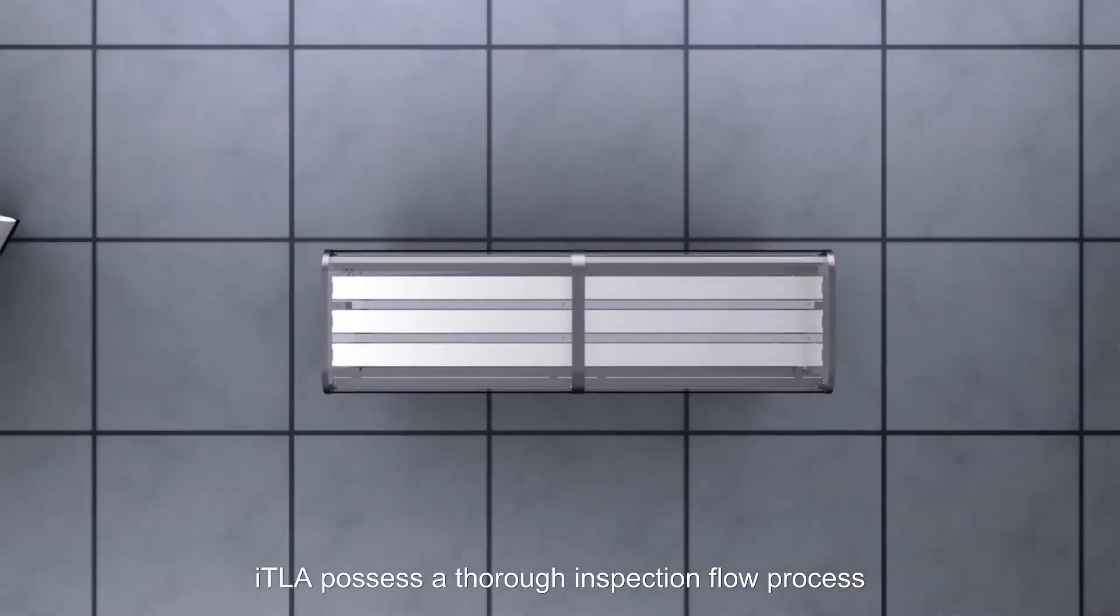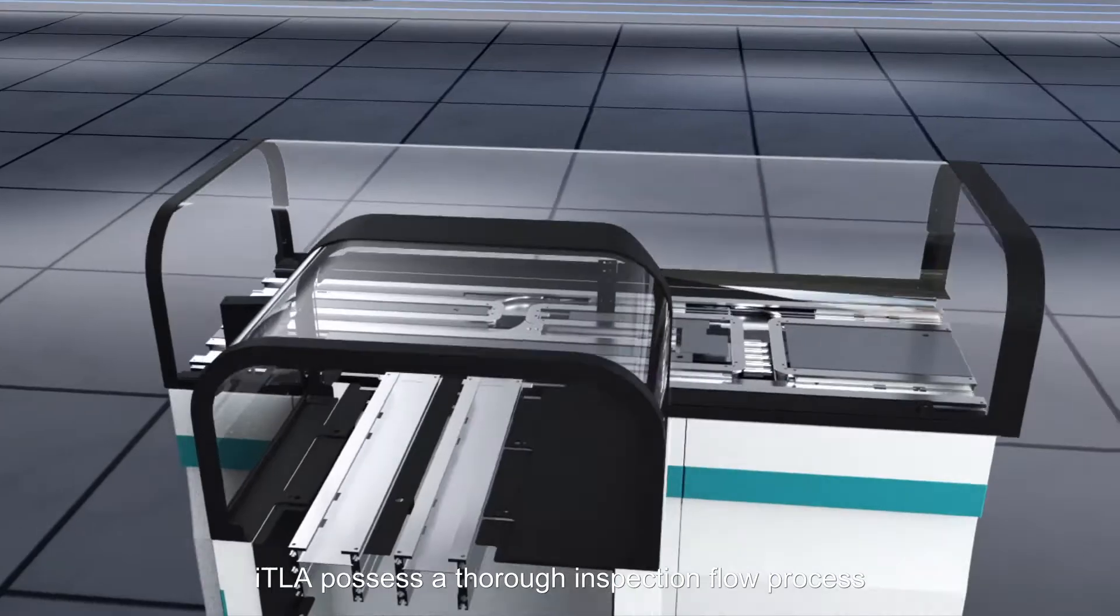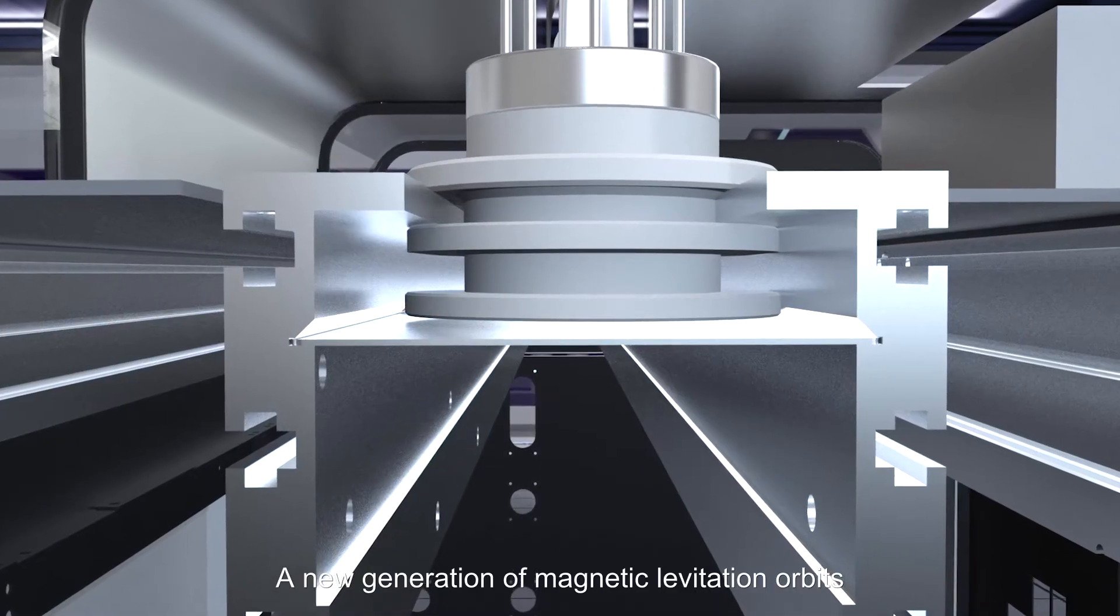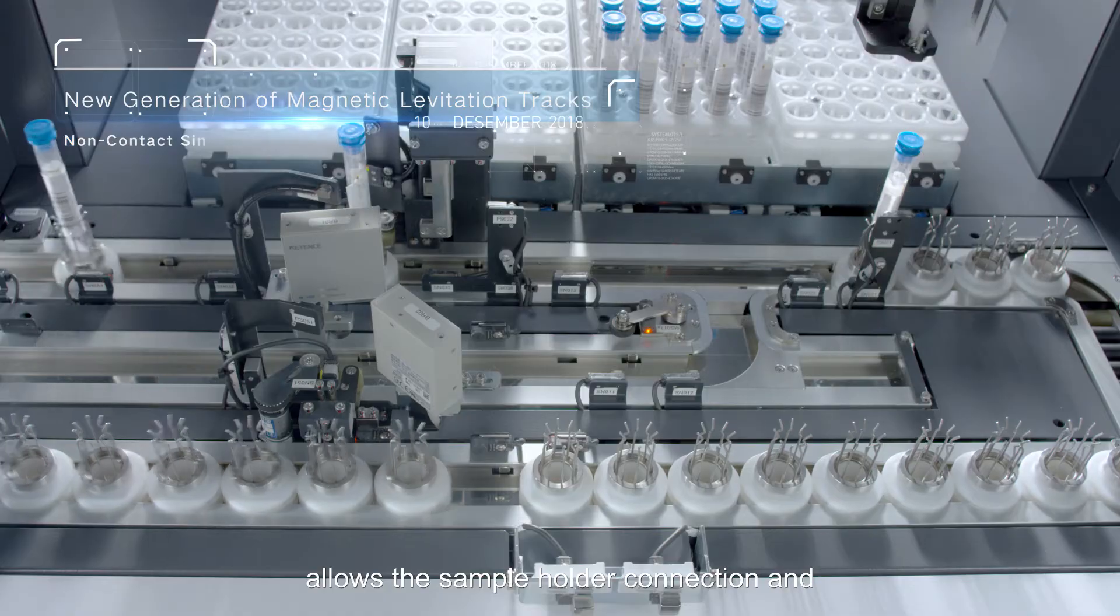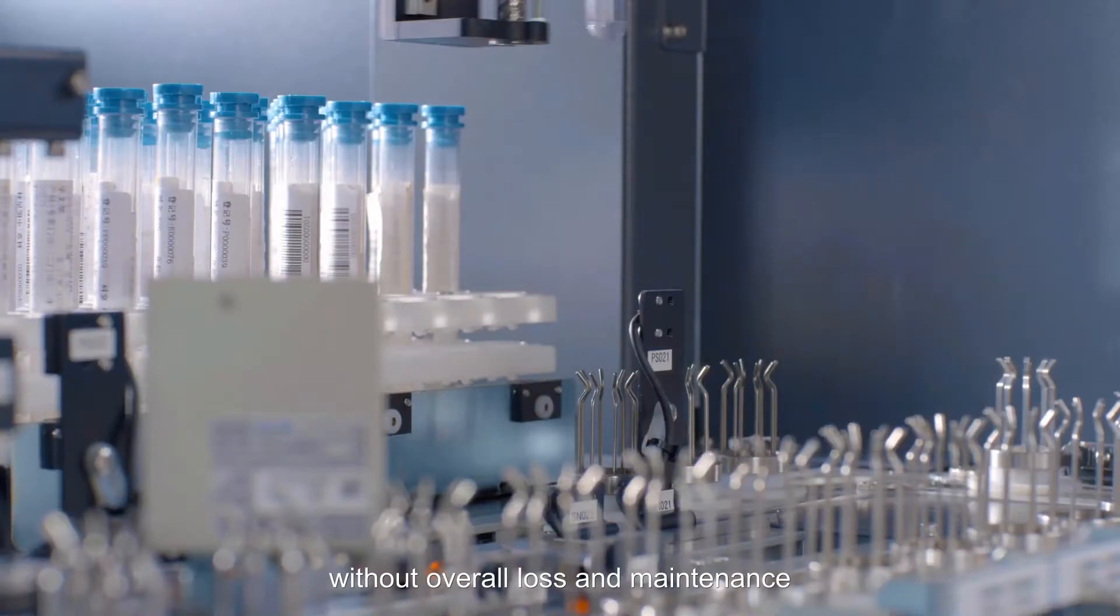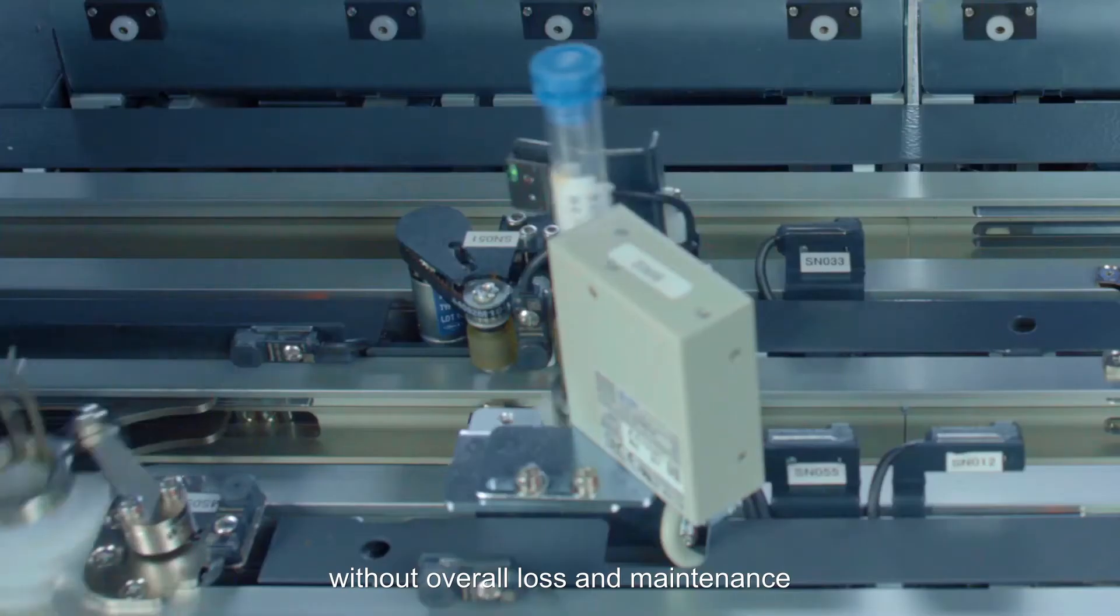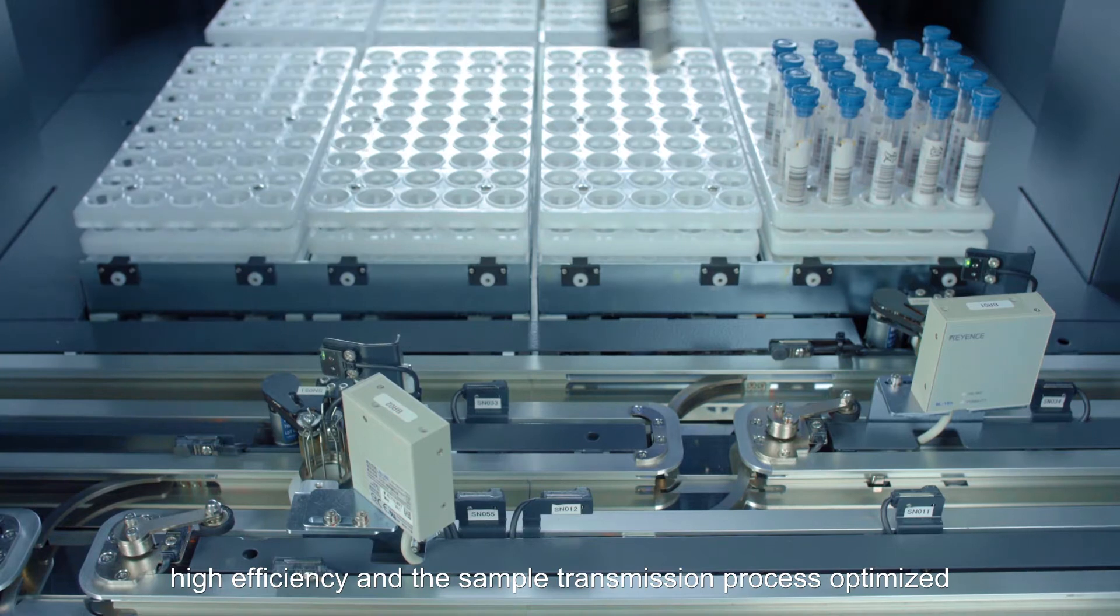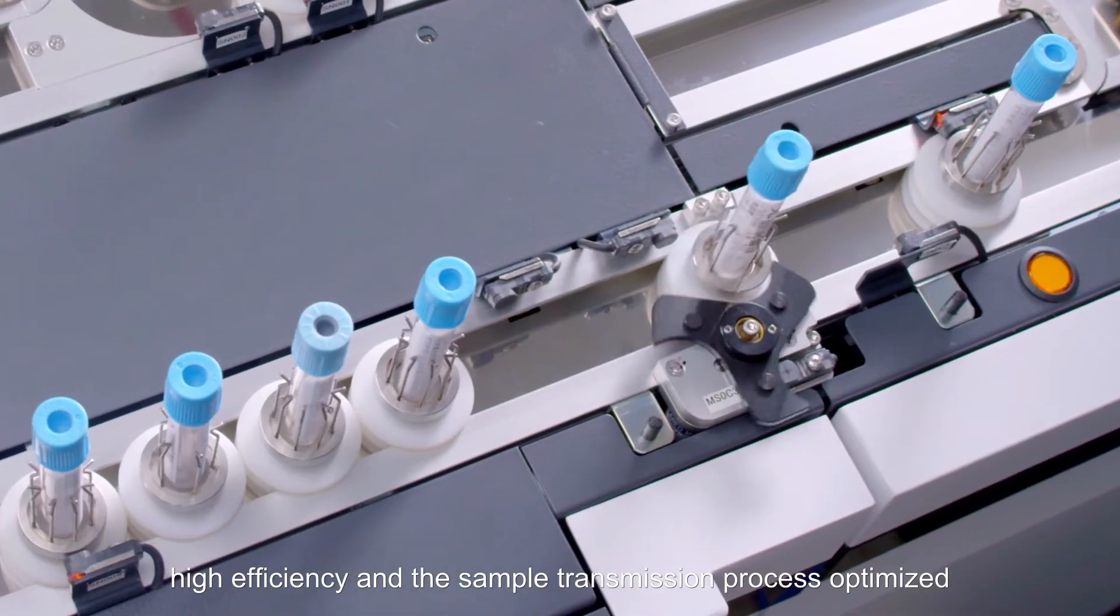ITLA possesses a thorough inspection flow process. A new generation of magnetic levitation orbits allows the sample holder connection and the bottom of the track to remain untouched without overall loss and maintenance. Single pipe transportation makes the sample scheduling highly efficient and the sample transmission process optimized.